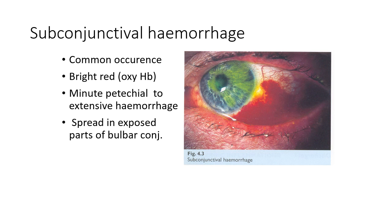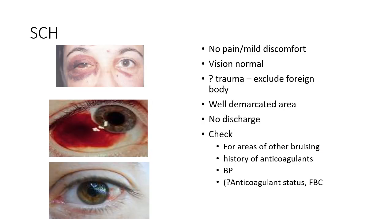This condition draws the patient's attention immediately, as it looks alarming, but most of the time it is trivial. The subconjunctival hemorrhage appears bright red because of oxyhemoglobin formation. It spreads in the exposed parts of the bulbar conjunctiva, ranging from minute petechiae to extensive hemorrhages. Causes include trauma, inflammation, venous congestion, spontaneous rupture of fragile capillaries, local vascular anomalies, and blood dyscrasias.